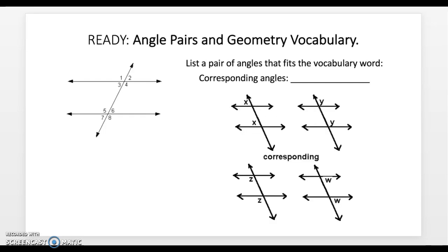To start us off, we have corresponding angles. Corresponding angles are going to be ones that are in the same spot at a different cross, so they are exactly the same angle at the different places where the transversal crosses the parallel lines.